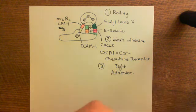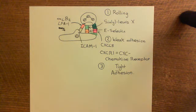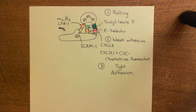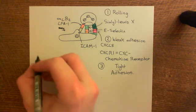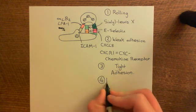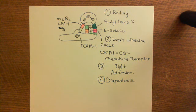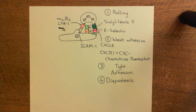The neutrophil then slithers through the now much larger gaps in the endothelial cells created by type 2 activation. While doing so, it forms interactions between PECAM-1 molecules on its surface and PECAM-1 molecules on the endothelial cell surface, helping it pass through into the interstitial fluid where it will phagocytose pathogens. This final step is diapedesis, or endothelial transmigration. The final topic — recruitment of monocytes in type 2 activated endothelial cells — will be discussed in the next video.